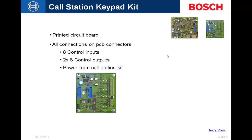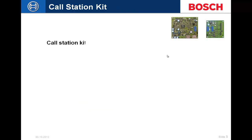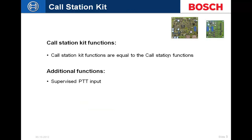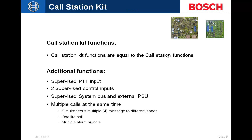The call station keypad kit provides two-by-eight control outputs — typically LEDs showing zone status such as selected, not selected, and in-use — along with eight control inputs for buttons to select zones and macros. Essentially, all the functions of a normal call station keypad are available on a circuit board.